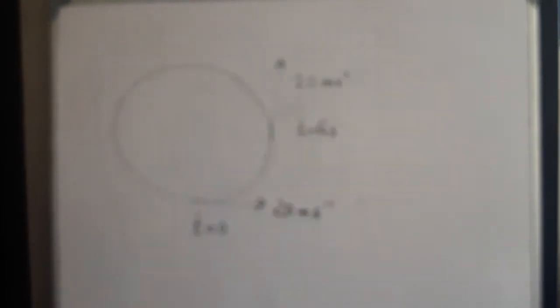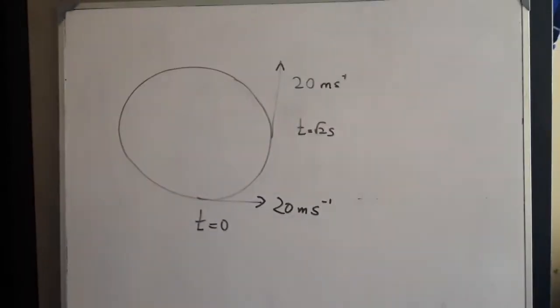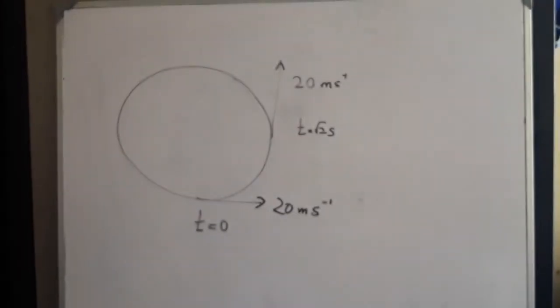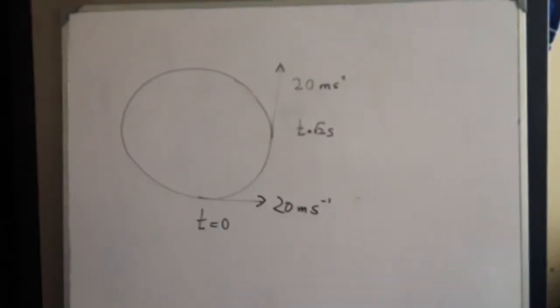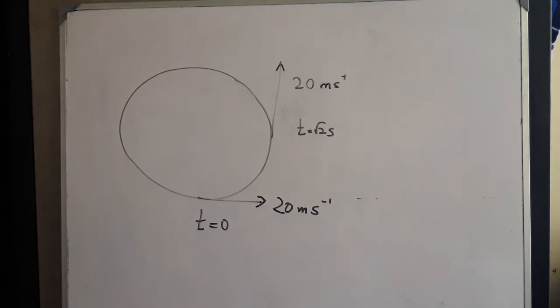Now, let's see the two sides. If you're doing the two sides, then you're doing the R3. There's 20 ms⁻¹, so we don't have the one side. It's not that one side.